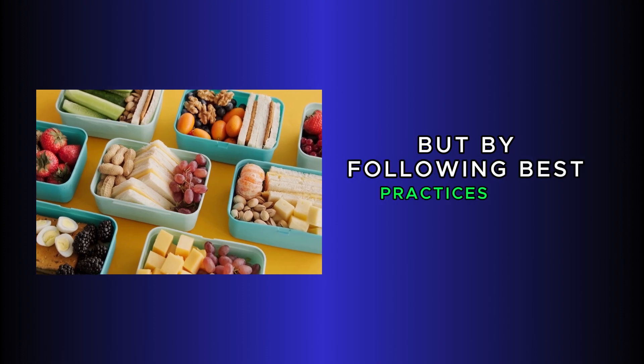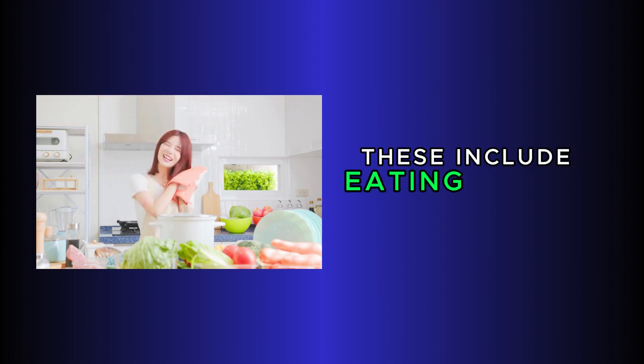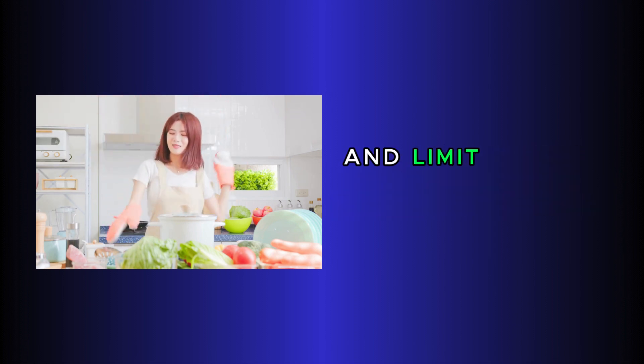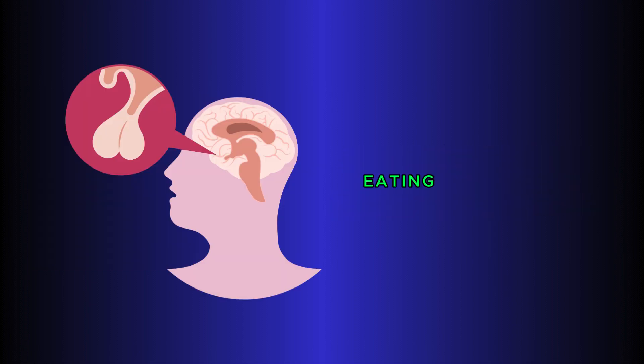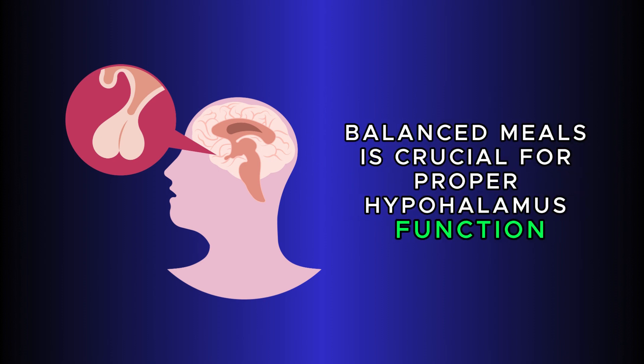But by following best practices for your diet, you can improve your overall health and hormones. These include eating enough nutritious food and limiting highly processed foods. Eating irregular balanced meals is crucial for proper hypothalamus function and hormone production.